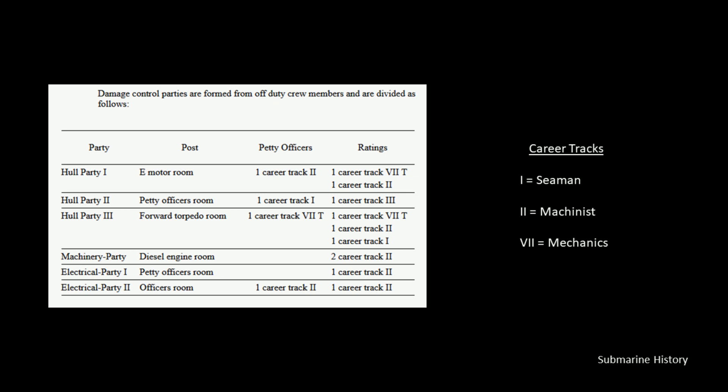For an example, we'll go with the first line — Hull Party 1. They would be posted in the E-Motor room. There would be one Petty Officer in Career Track 2, which is Machinist, and then two additional members of that damage control party. These additional members would have been enlisted, not Petty Officers — drawn from the torpedo men.